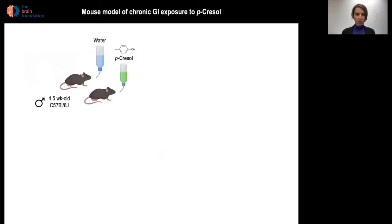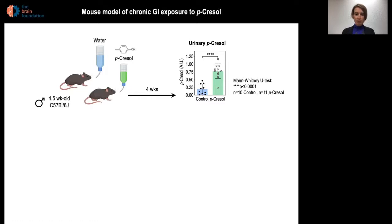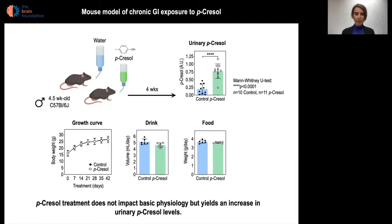To answer this question, we established a mouse model of chronic gastrointestinal exposure to p-cresol, by exposing mice through drinking water to p-cresol and using mice drinking regular water as controls. After four weeks of treatment with paracresol, we observed an increased urinary excretion of p-cresol within the range of what is observed in ASD patients. The p-cresol treatment did not affect the growth curve, drink, or food intake of the treated animals.